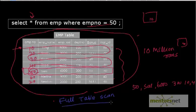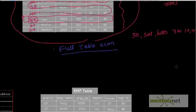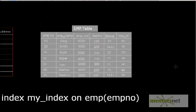As in the book example, a full table scan needs to be avoided if you want to get results in a reasonable time. In order to do that — just like the book analogy where the author created an index — we are going to create an index in Oracle.